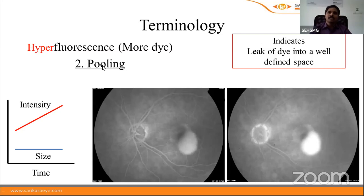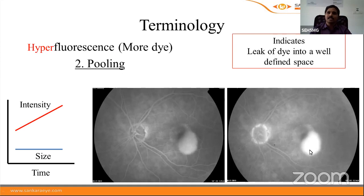Pooling is characterized by an increase in intensity of hyperfluorescence over time, whereas the size remains constant. The size of the hyperfluorescence is almost similar while the intensity significantly increases in the late phase. This usually indicates leak of dye into a well-defined space such as a pigment epithelial detachment or a neurosensory detachment.